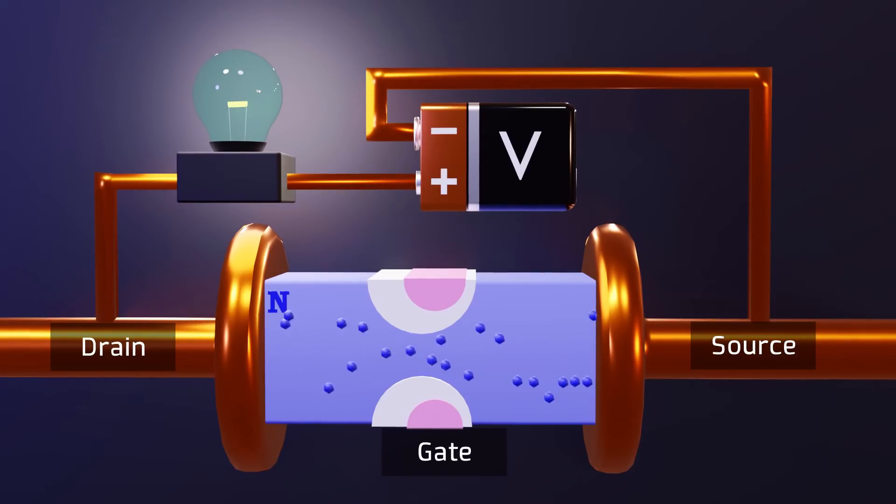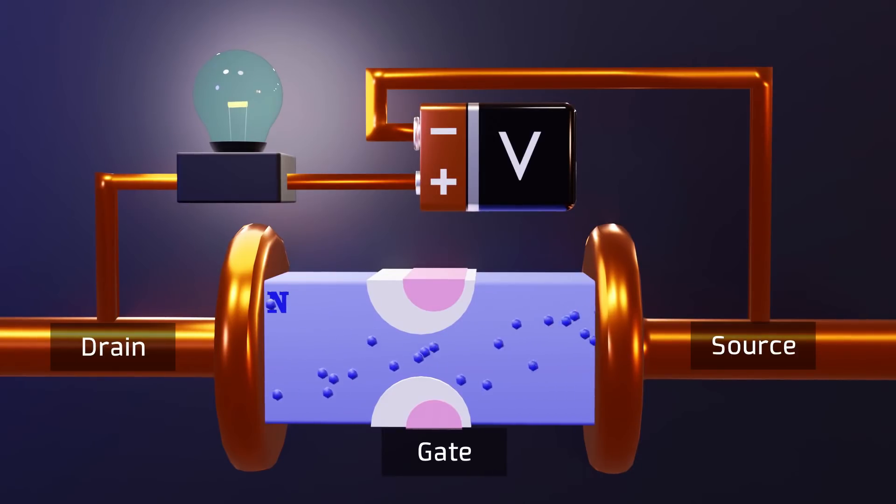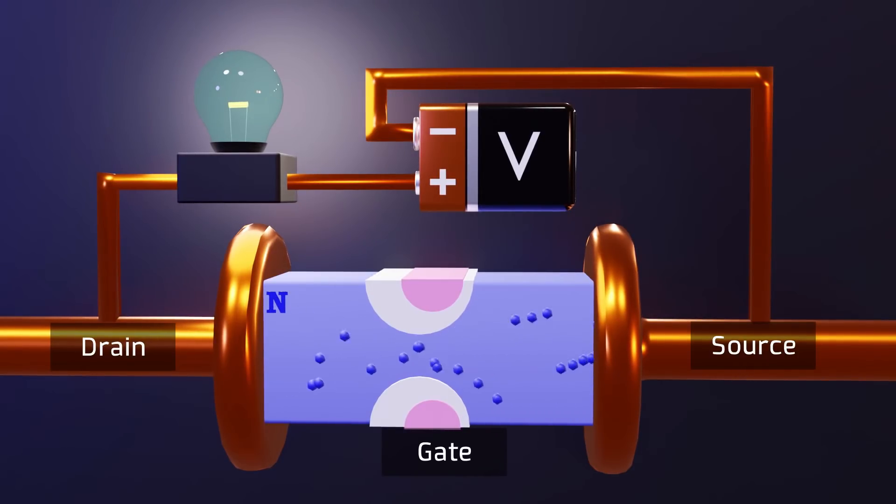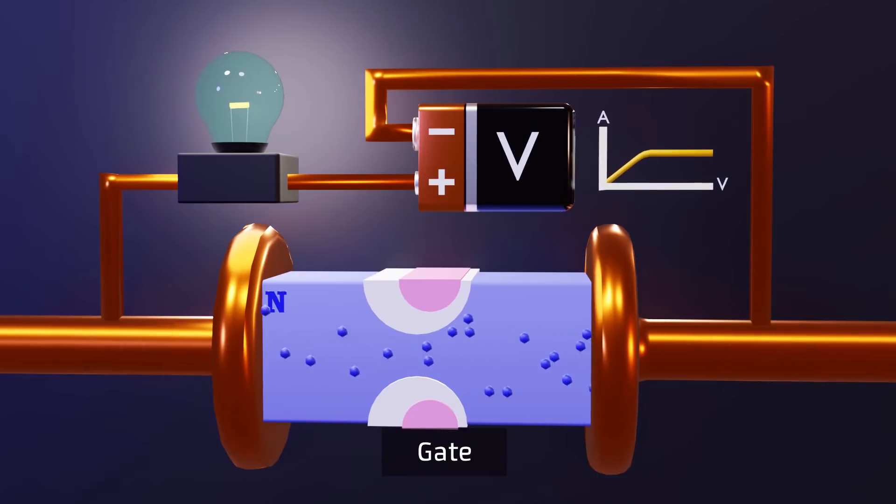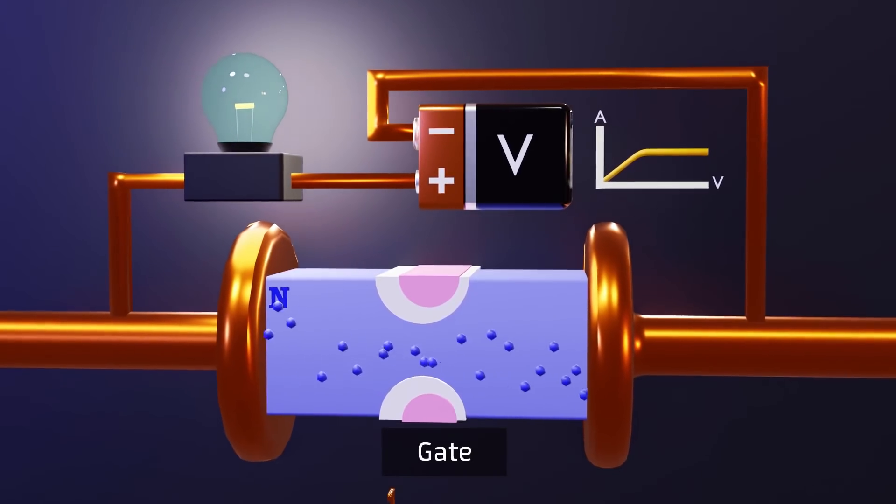Therefore the higher the voltage the greater the depletion zone in which there are no free charge carriers, which finally means that our channel that previously allowed electrons to pass freely now is much narrower and therefore will limit the current that passes between the source and the drain. So if we made a current versus voltage curve the result would be something like this. And now you are surely asking, so what does the gate do?